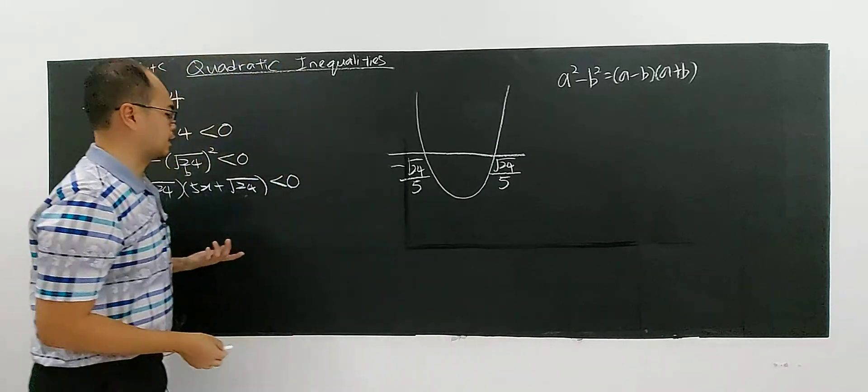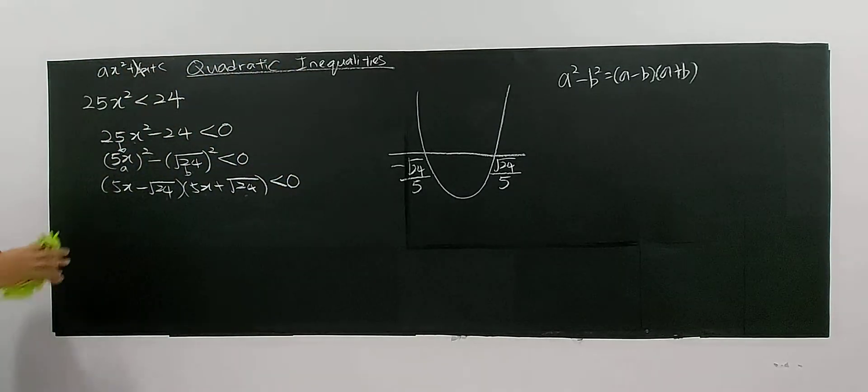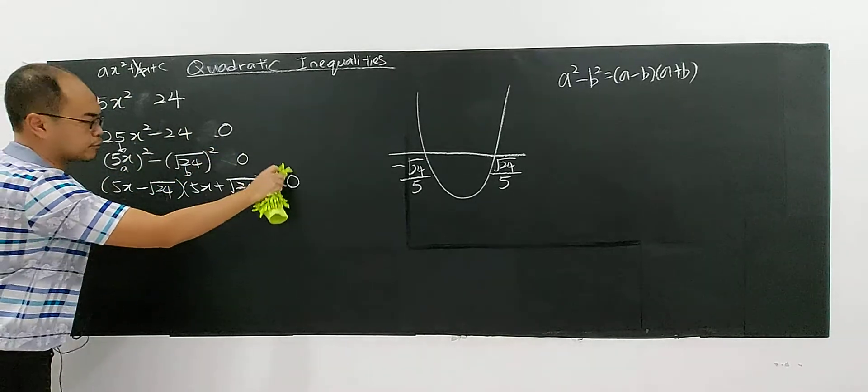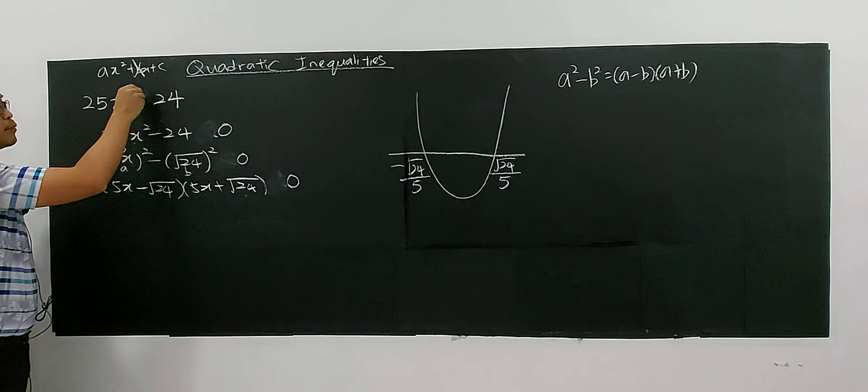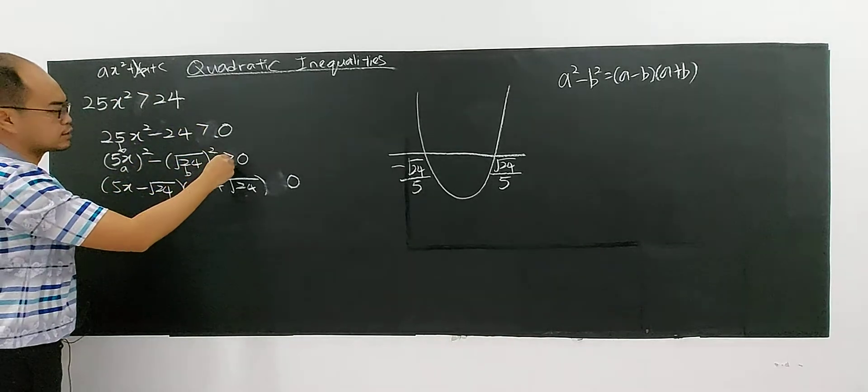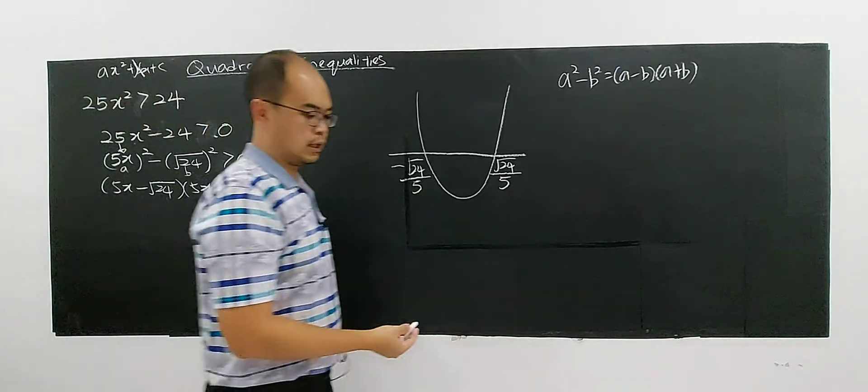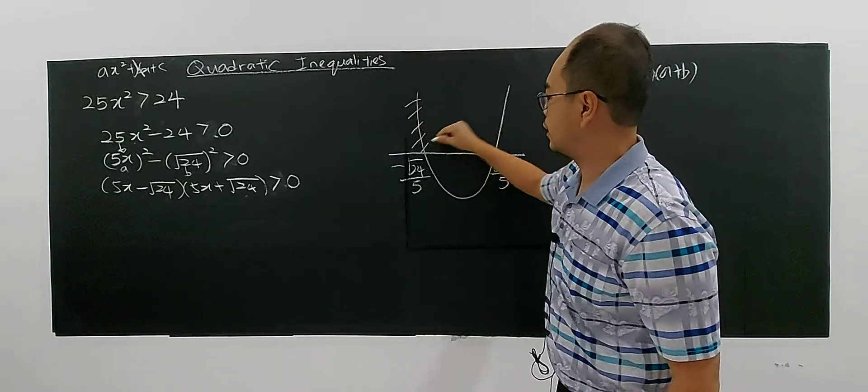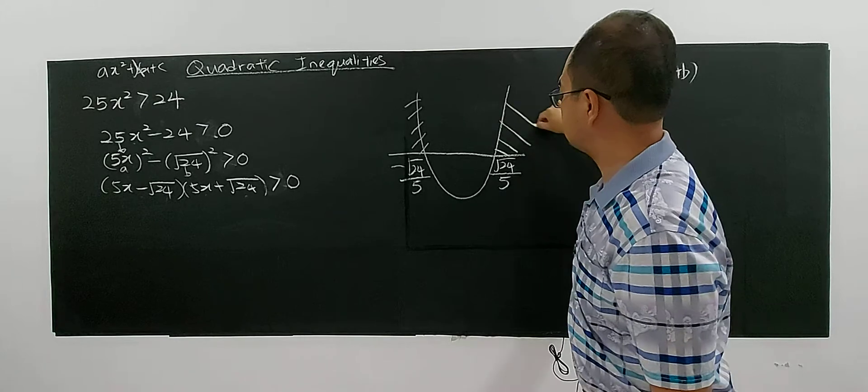So some students may ask, what about if this case is happened to be greater than? I can change the question now become greater than. If this case is happened to be greater than, then of course, the area will be above the x axis. This is the region.